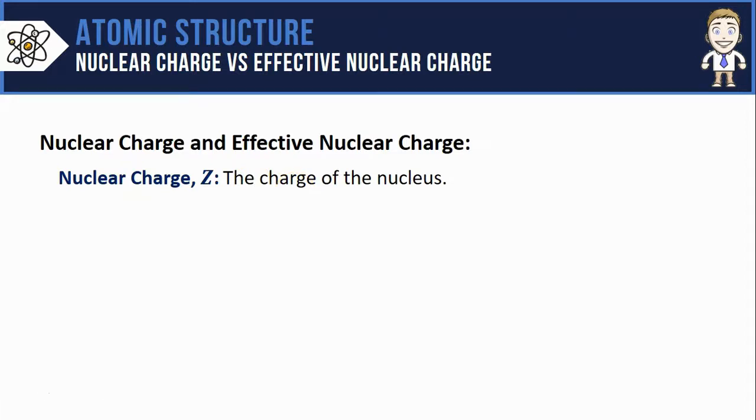Nuclear charge is nothing more than the charge of the nucleus. Since a nucleus is only made of two particles, protons and neutrons, neutrons which have no charge, that means the whole charge of the nucleus, the whole nuclear charge is only caused by the protons, you simply count them up.